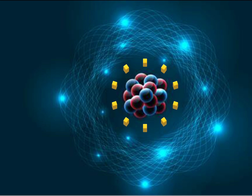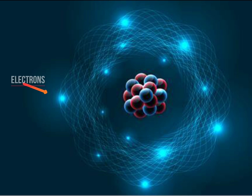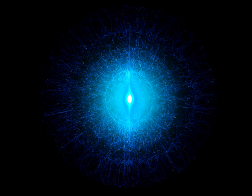The protons and neutrons make up most of the atom's mass. The third type of subatomic particles are called electrons. Electrons are negatively charged and are much smaller than protons and neutrons. Electrons are found outside the nucleus in a region called the electron cloud.